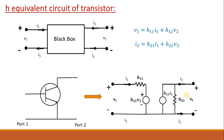In the input side, we will have input voltage V1, a current passing through H11, and a voltage source equal to H12·V2. Applying KVL in the input side gives V1 = H11·I1 + H12·V2. Similarly, for the output side, voltage is V2 and current I2 passes through two paths: one through H22 and another through a dependent source H21·I1. Applying KCL gives I2 = H21·I1 + H22·V2. This is the H-equivalent circuit of a transistor.